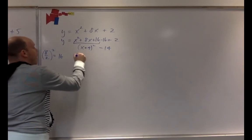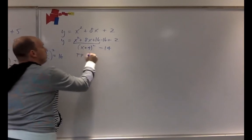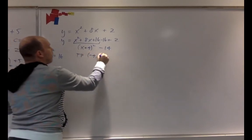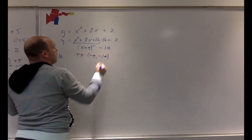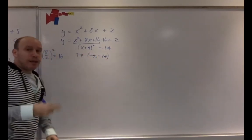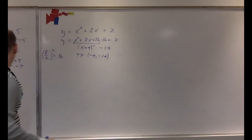The result is (X plus 4) squared minus 14. Recall that the turning point was, in fact, negative 4, negative 14.